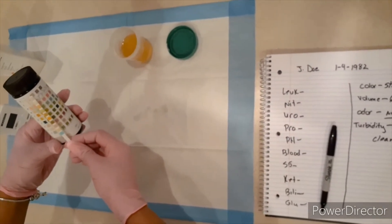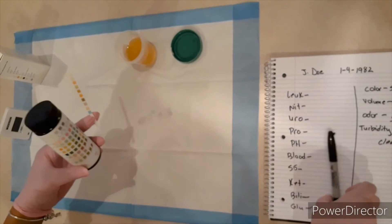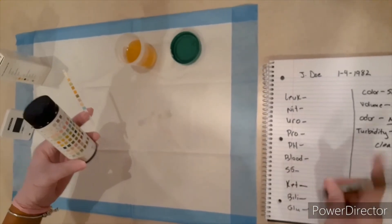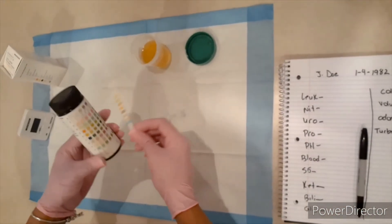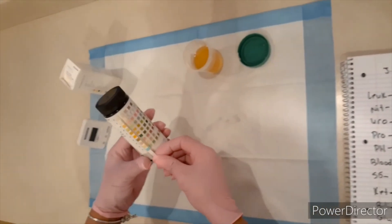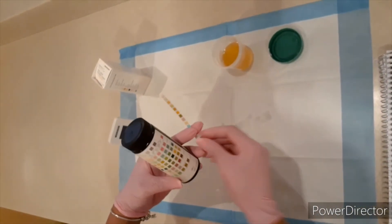Ketones are at a negative as well. So in 45 seconds, which we need our specific gravity, which is a 1.015.